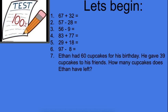Number seven, this is a story sum. Ethan had 60 cupcakes for his birthday. He gave 39 cupcakes to his friends. How many cupcakes does Ethan have left? Remember, think of what your special word is to tell you if it's a plus or a minus sum.